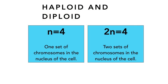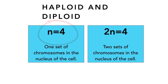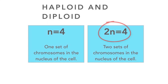Two terms you need to know are haploid and diploid. Haploid means one set of chromosomes in the nucleus of the cell, denoted by a lowercase n. Diploid means two sets of chromosomes in the nucleus of the cell, denoted by 2n.